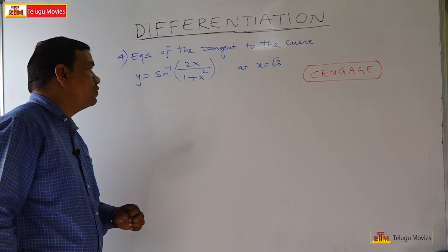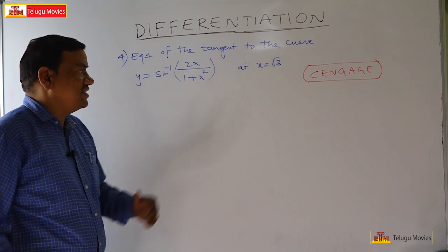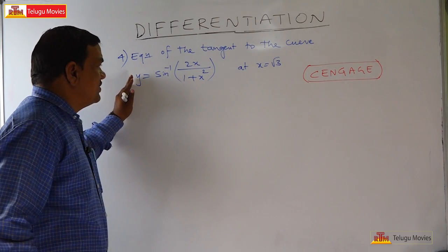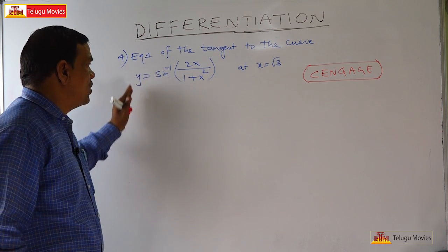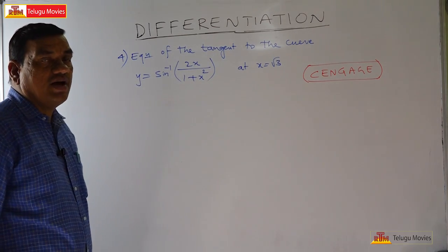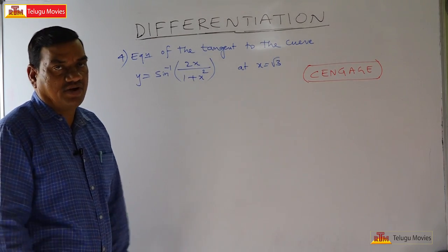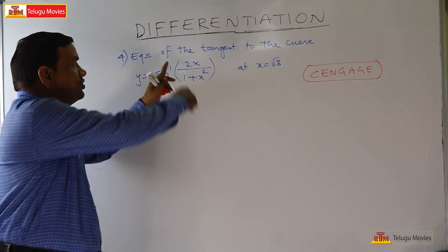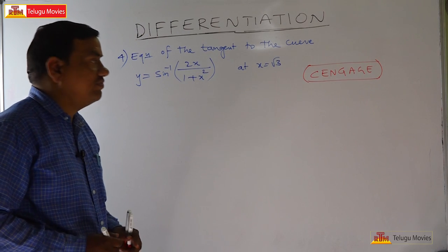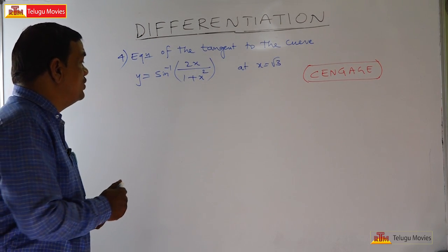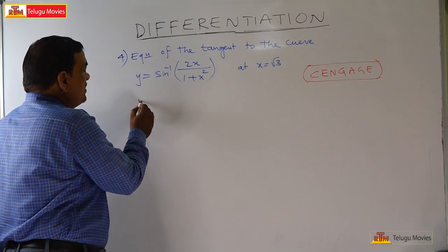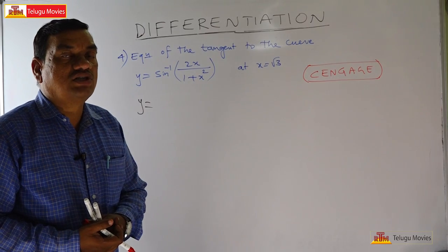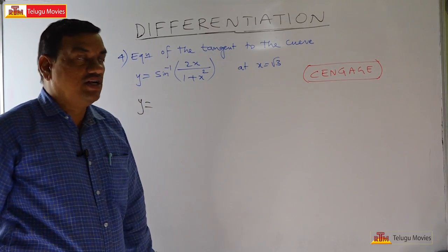Welcome to the next problem: find the equation of the tangent to the curve y = sin⁻¹(2x/(1+x²)) at x = √3. If you try to differentiate this directly using the chain rule and quotient rule, it becomes very difficult. The trick is to simplify using inverse trigonometric properties.